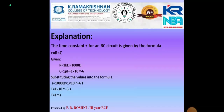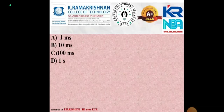Now let's look at the solution for this question. We know that the time constant for an RC circuit is derived from Tau = R × C. From the question, the value of R is equal to 1 kΩ and C is equal to 1 µF. Substituting the values in the formula, we get Tau is equal to 1 ms. So the correct answer is option A, 1 ms.